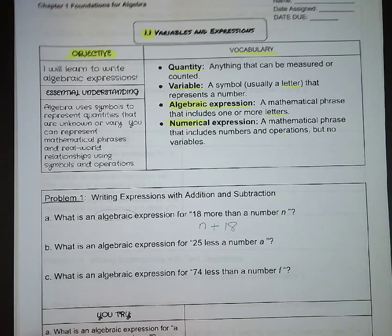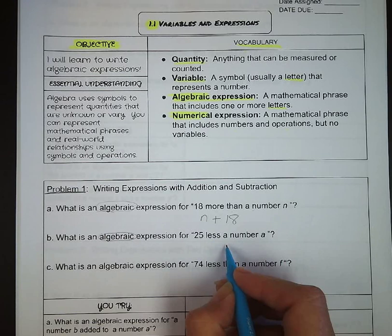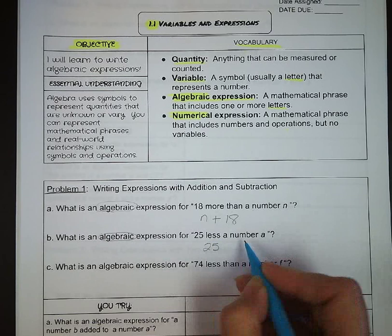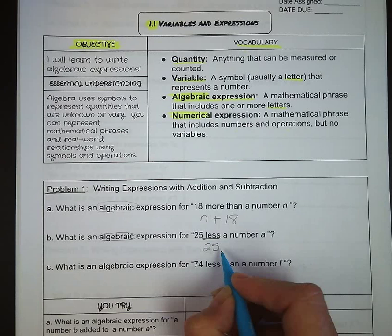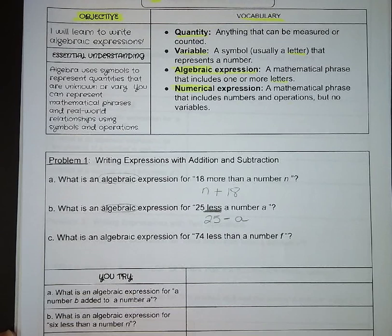What is an algebraic expression for 25 less a number a? So we're starting with 25, and when it says just the word less there, that means we are taking away whatever is afterwards. So it's going to be 25 minus a. So that's going to be one phrase that you want to be looking for, whether it's more than, less than, or just more or less. They are meaning two different things in terms of the order.